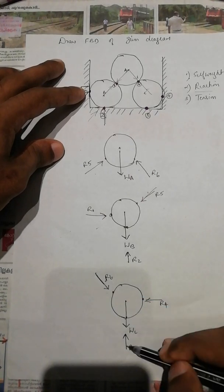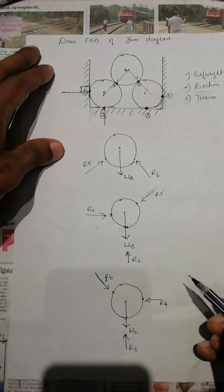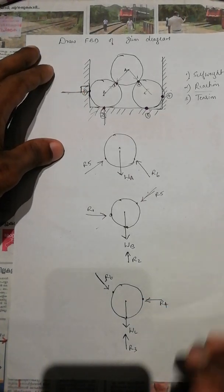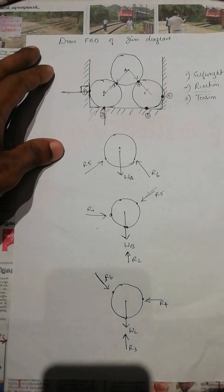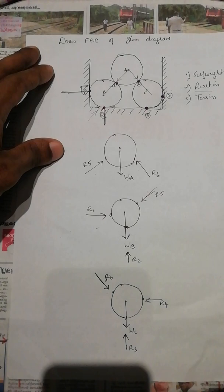Now we will have four reactions. This is the question. We will have to solve the free body diagram problem. We will remove the free body diagram item and open the problem to solve it.